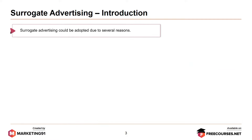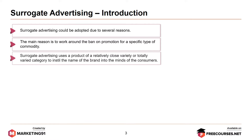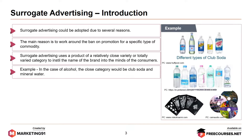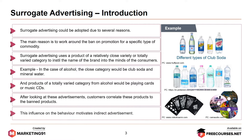Surrogate advertising could be adopted due to several reasons. The main reason is to work around the ban on promotion for a specific type of commodity. It uses a product of a relatively close variety or totally varied category to install the name of a brand into the minds of customers. For example, in the case of alcohol, the close category would be club soda and mineral water, while totally varied categories would be playing cards or music series. After looking at these advertisements, customers correlate these products to the banned products, and this influence on behavior motivates indirect advertisements.